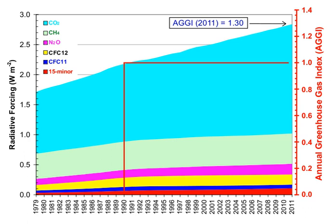It is likely that anthropogenic warming, such as that due to elevated greenhouse gas levels, has had a discernible influence on many physical and biological systems. Future warming is projected to have a range of impacts, including sea level rise, increased frequencies and severity of some extreme weather events, loss of biodiversity, and regional changes in agricultural productivity.